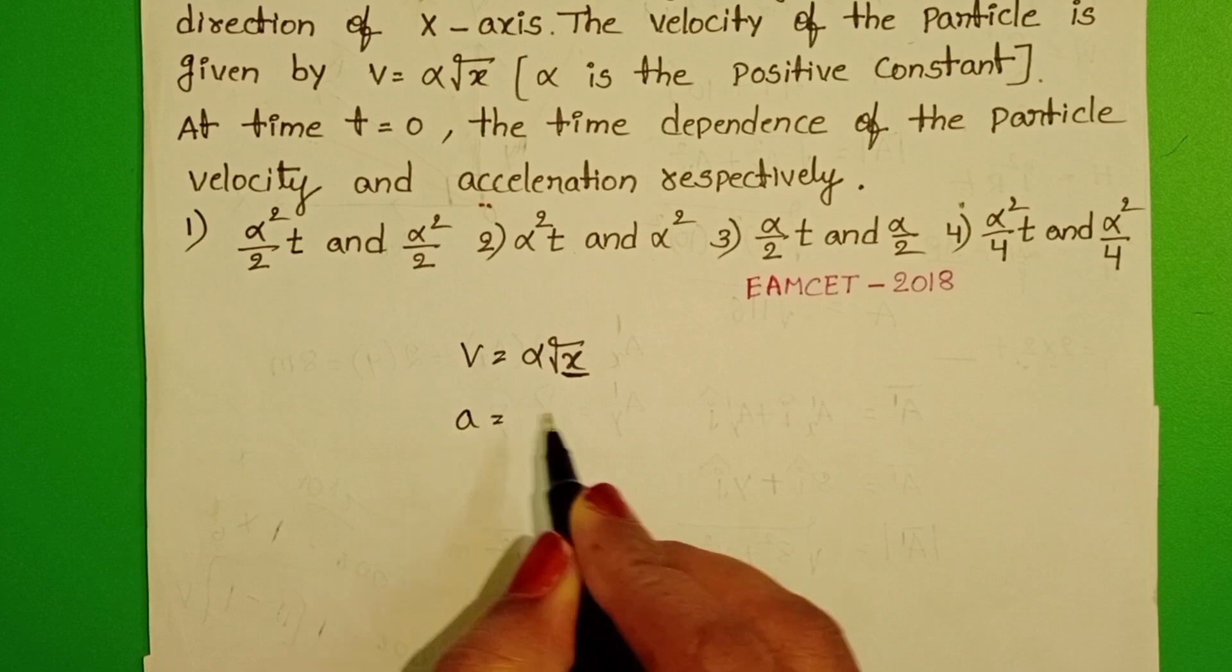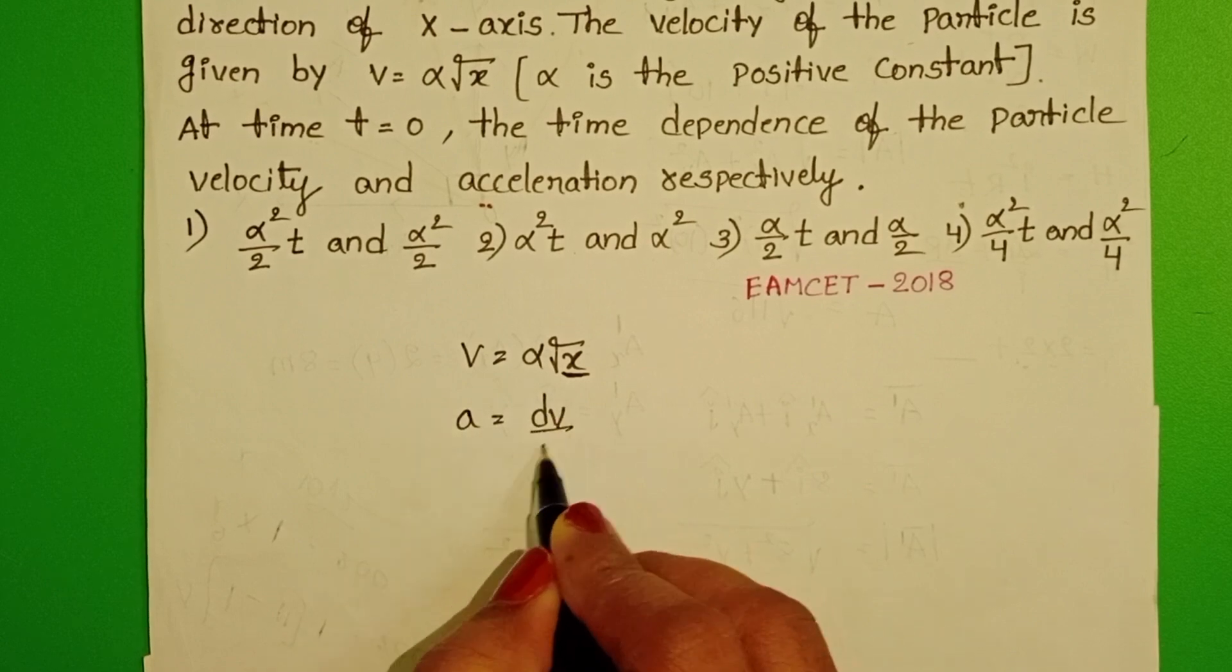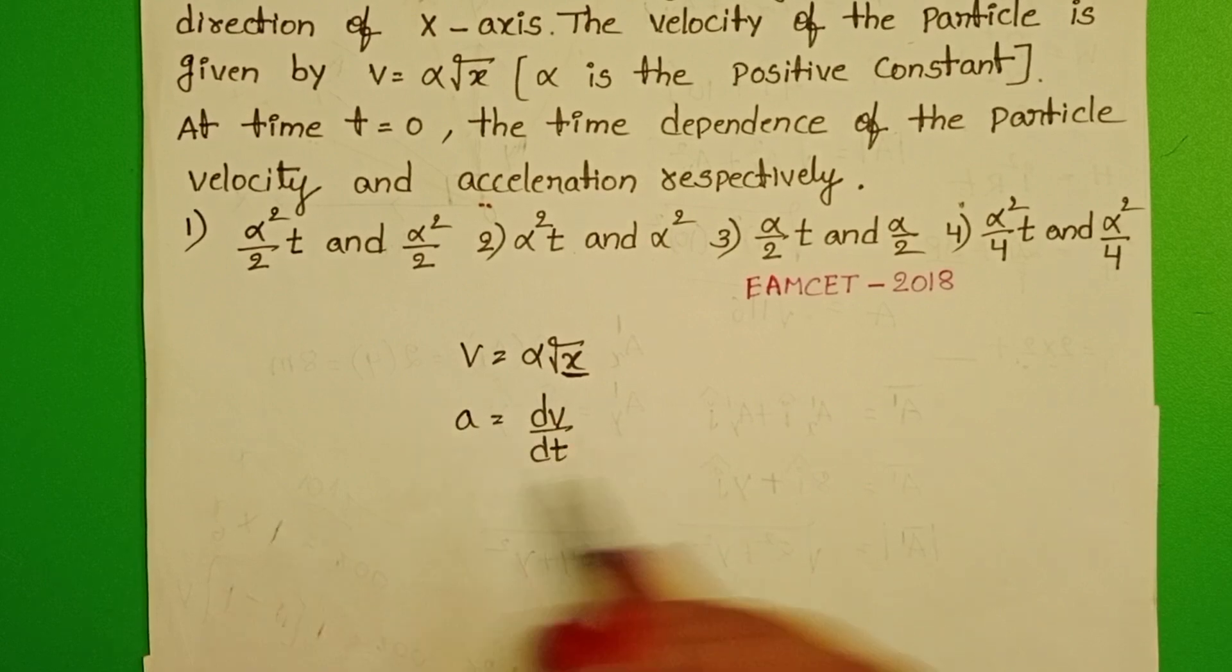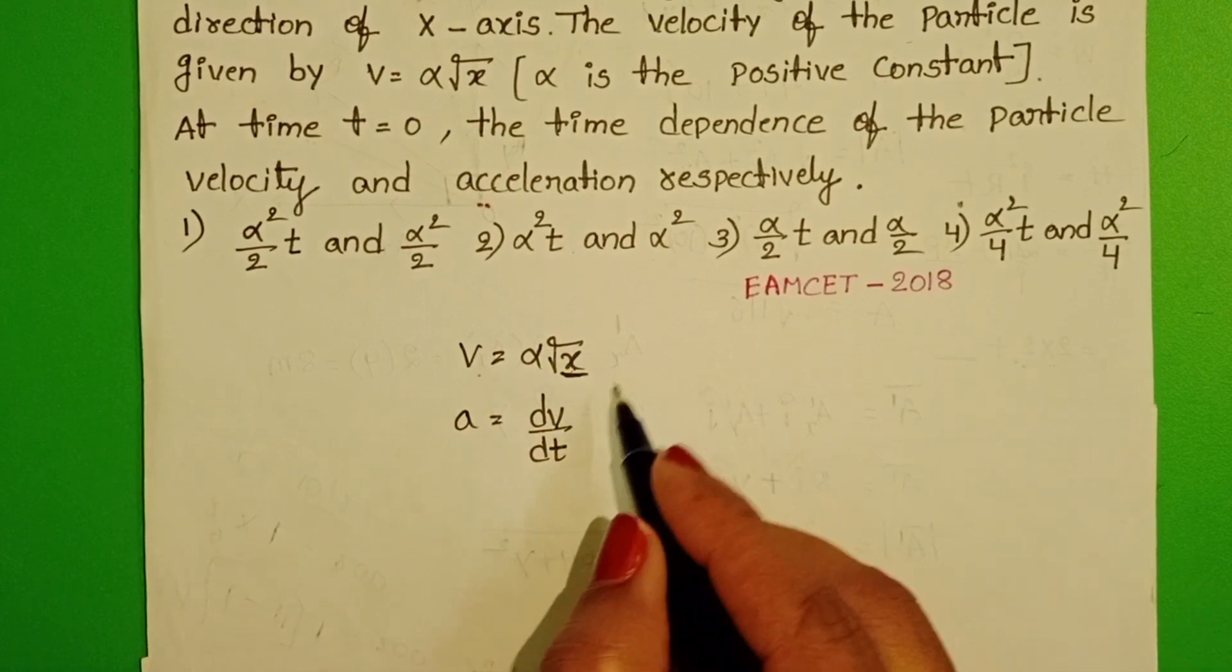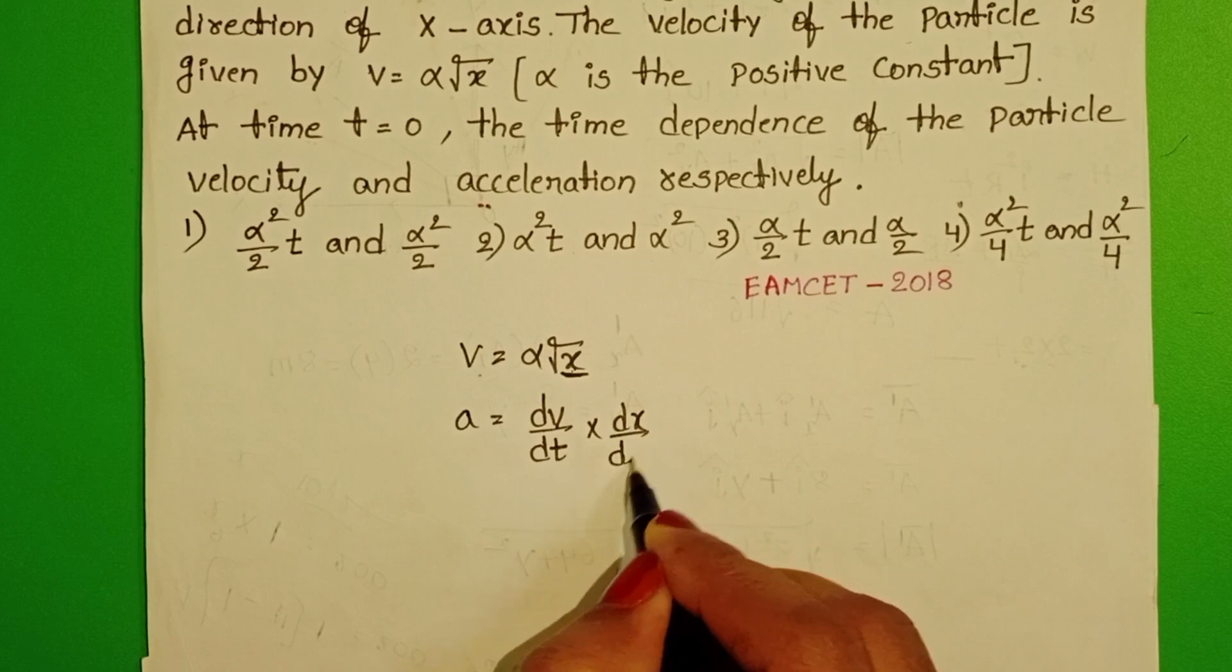We know acceleration, rate of change of velocity is called acceleration. But velocity is a function of x. Multiply and divide with dx.